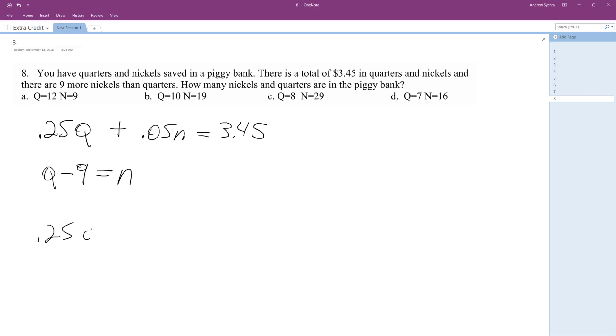So 0.25Q plus 0.05 times Q minus nine equals 3.45. Just distribute this. So we get 0.05Q minus 0.45 equals 3.45, and then 0.25Q.